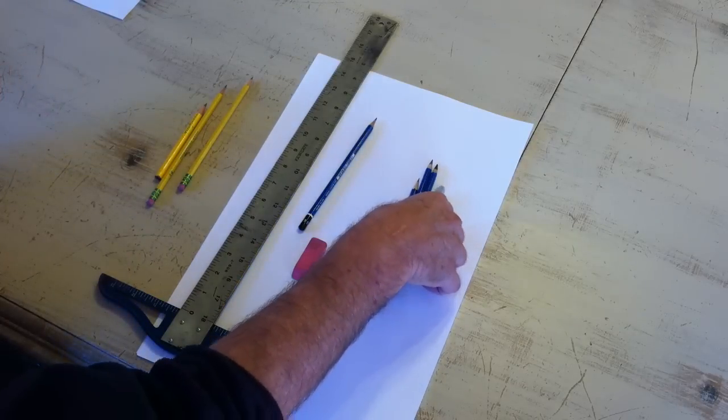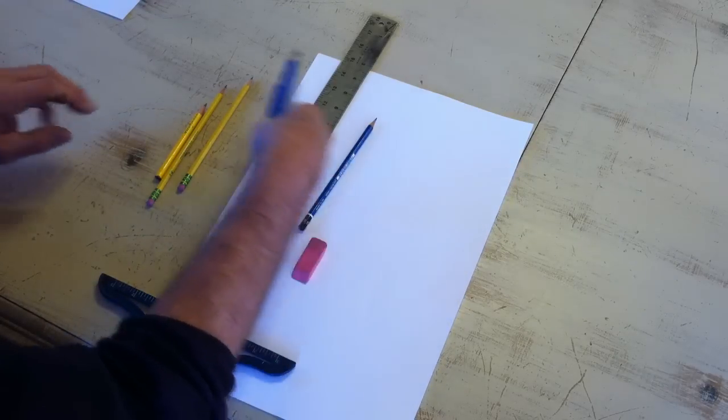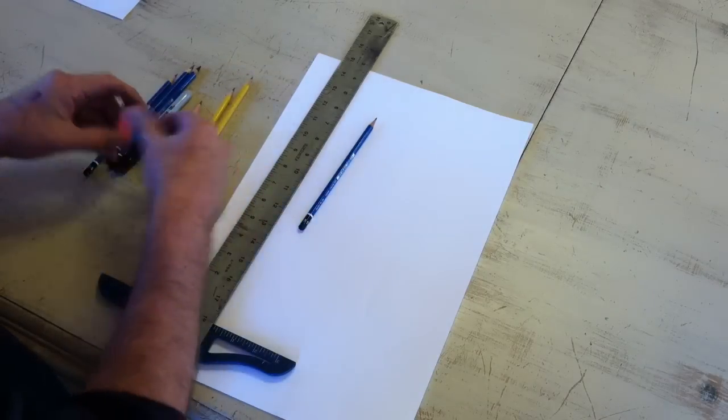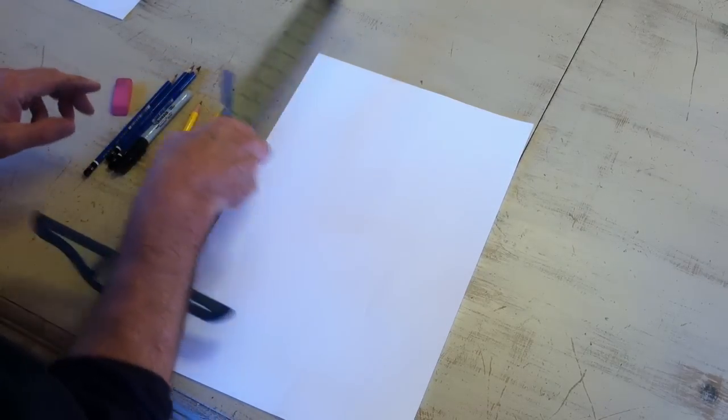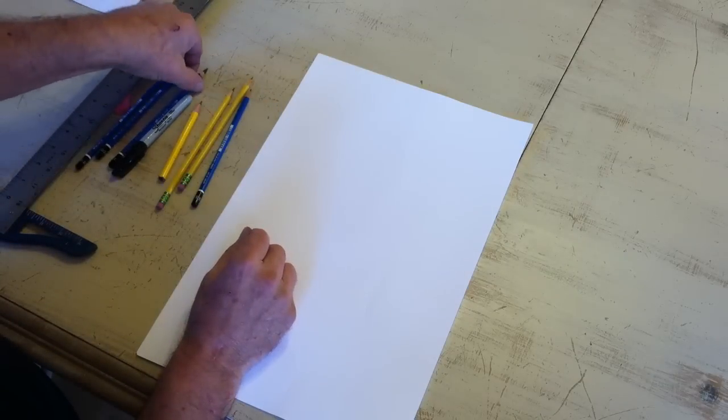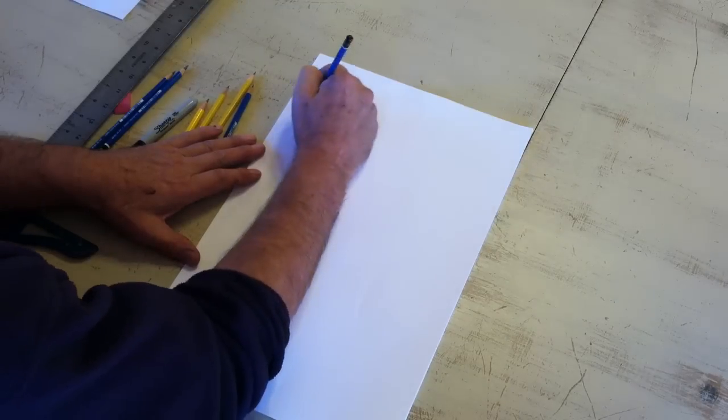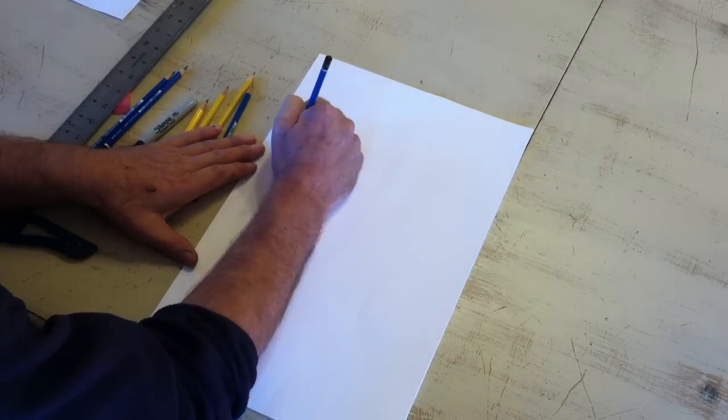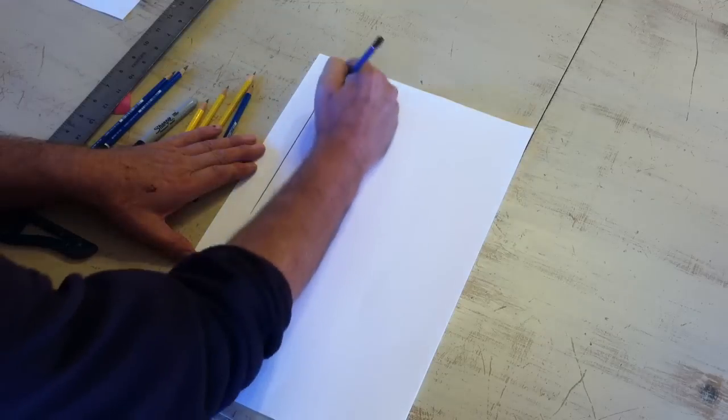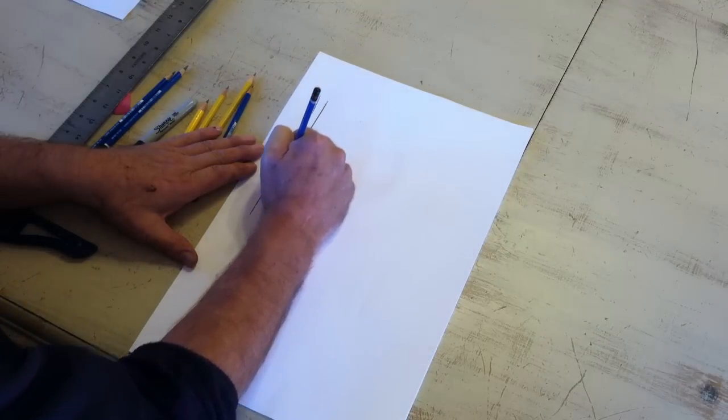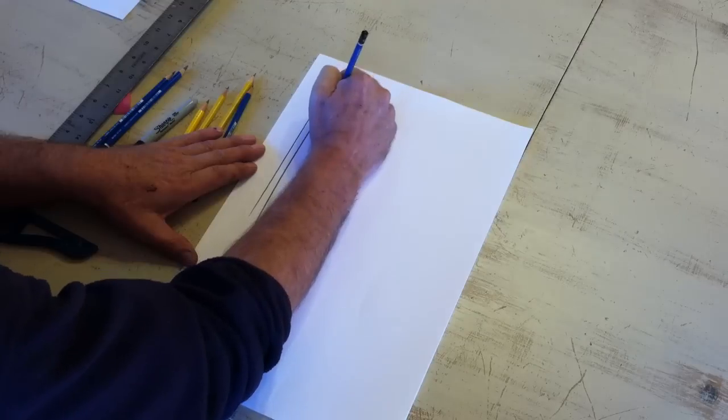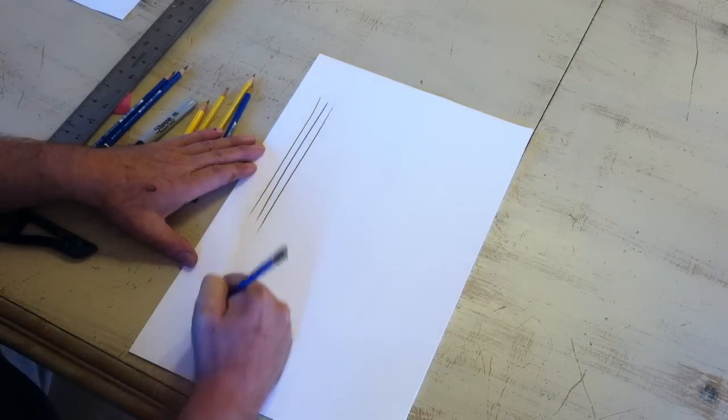Okay, there are basically five different types of line. One line is the vertical line. Vertical line, straight line.